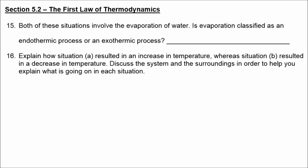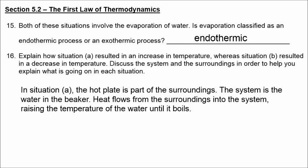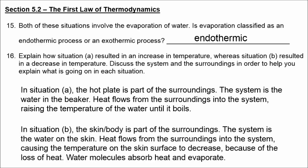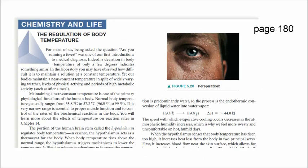The trick is to decide: are you part of the system or part of the surroundings? In both situations, evaporation is an endothermic process. In situation A, the hot plate, which is part of the surroundings, is transferring heat into the system — the water in the beaker — and the water gets hotter until it boils. In situation B, the skin is part of the surroundings, so the skin surface temperature decreases because it is losing heat. The water molecules are still absorbing heat in both cases. You can learn more about body temperature regulation on page 180.